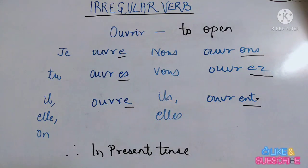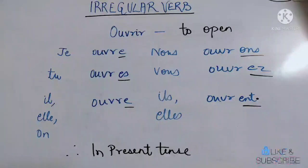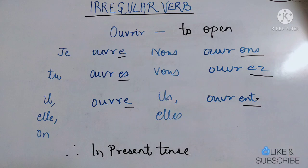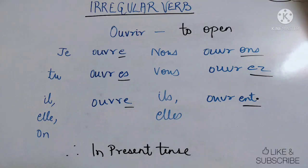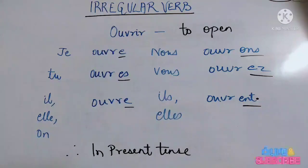This verb follows the conjugation of an -IR ending regular verb. 'Ouvrir' means 'to open'. So 'j'ouvre' means 'I open', 'tu ouvres' means 'you open', 'il ouvre' means 'he opens'. The same goes for the plural category: 'nous ouvrons' means 'we open', 'vous ouvrez', 'ils ouvrent'.